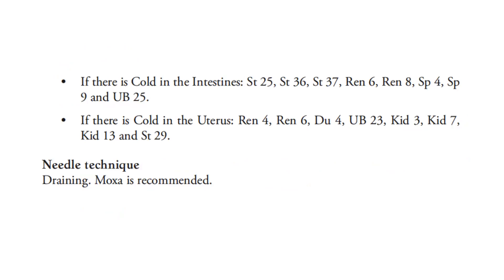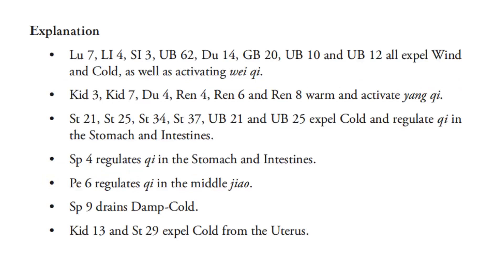If there is cold in the uterus, we use REN4, REN6, DU4, Bladder 23, Kidney 3, Kidney 7, Kidney 13, and Stomach 29. We use a draining or sedating needle technique, and moxa is recommended. Lung 7, LI4, SI3, Bladder 62, DU14, GB20, Bladder 10, and Bladder 12 all expel wind and cold, as well as activating Wei Qi. Kidney 3, Kidney 7, DU4, REN4, REN6, and REN8 warm and activate Yang Qi. Stomach 21, Stomach 25, Stomach 34, Stomach 37, Bladder 21, and Bladder 25 expel cold and regulate Qi in the stomach and intestines. Spleen 4 regulates Qi in the stomach and intestines. Pericardium 6 regulates Qi in the middle jiao. Spleen 9 drains damp cold. Kidney 13 and Stomach 29 expel cold from the uterus.